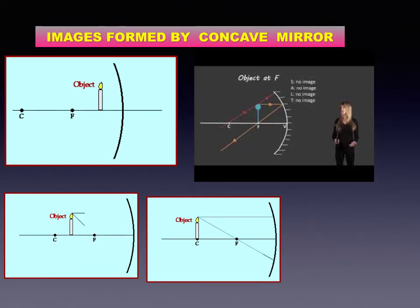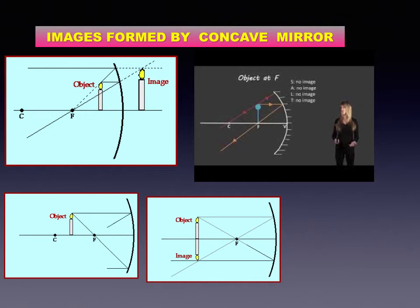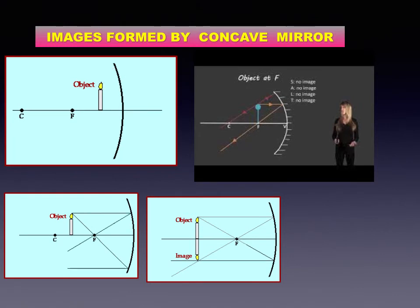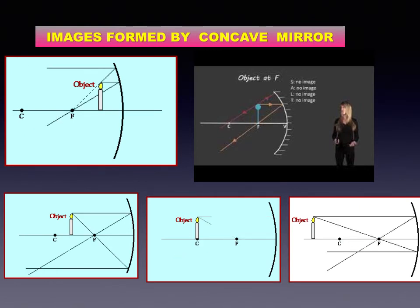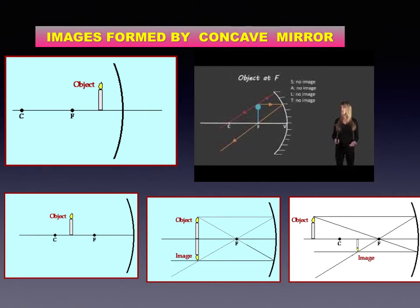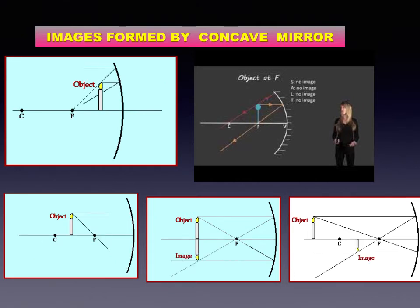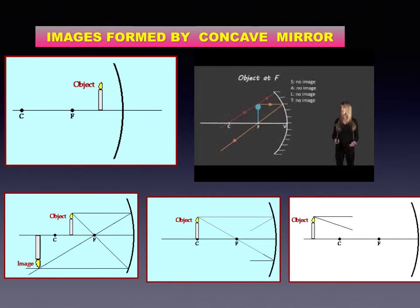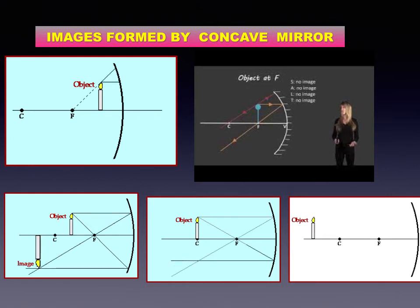In the fourth picture, the object is at the center of curvature. The image is also at the center of curvature; it is inverted, real, and the same size as the object. In the next picture, the object is beyond the center of curvature. The image is formed between the center of curvature and the focus; it is inverted, real, and diminished.